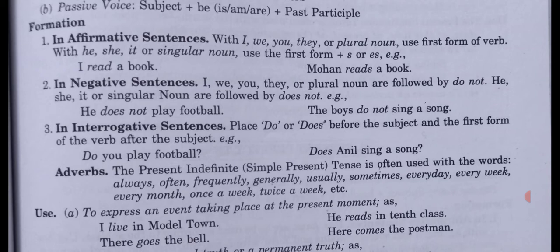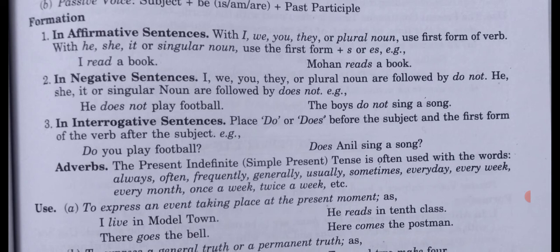In affirmative sentences with I, we, you, they, or a plural noun, use only the first form of the verb. With he, she, it, or any singular noun, use the first form plus s or es. For example: 'I read a book.' Second: 'Mohan reads a book' — since Mohan is a singular subject, we use read plus s.